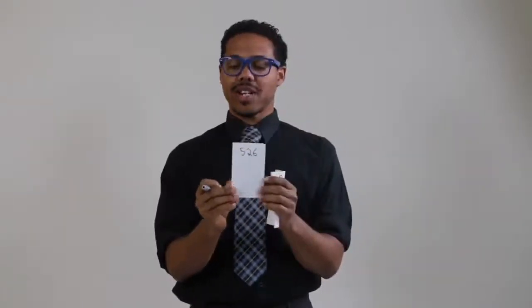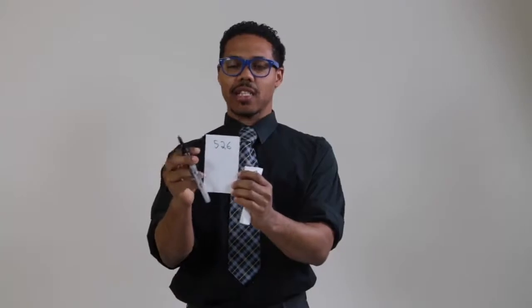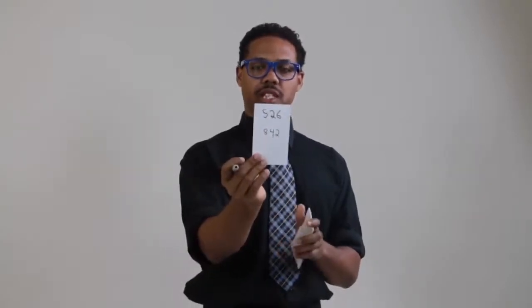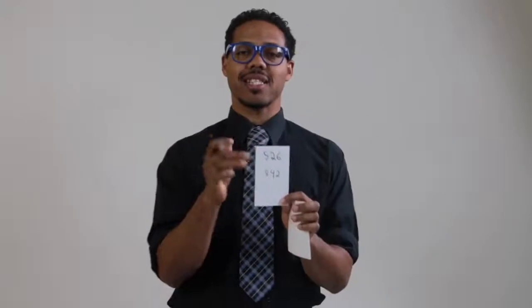Let's say somebody thought of the number 526 — so they write 5-2-6 at the top. Then you tell them: 'Take the sharpie and the index card and pass it to someone next to you.' That person writes another three-digit number under the first one — let's say they write 842. So now you have two three-digit numbers. At this point you have not touched the index card or the sharpie; it's been in spectators' hands the entire time.